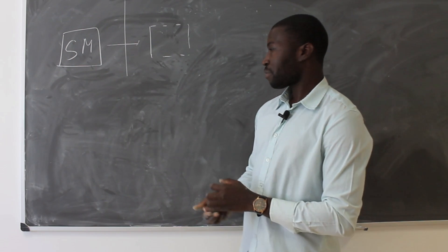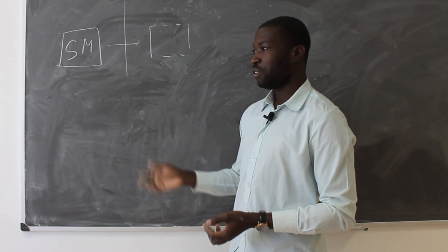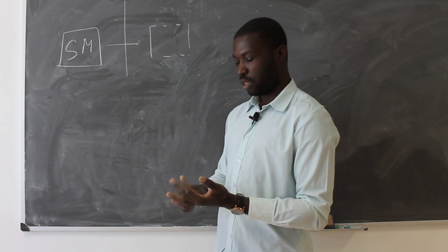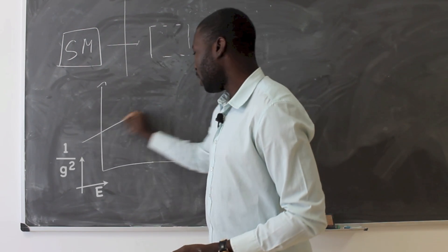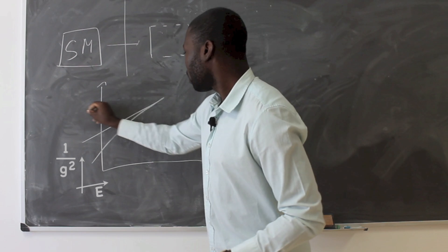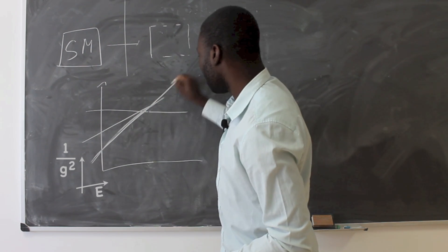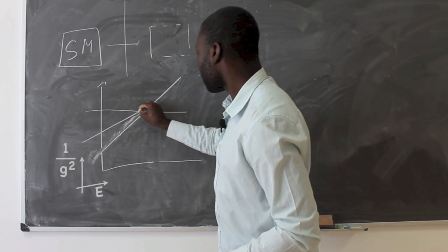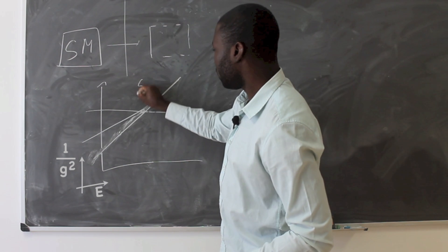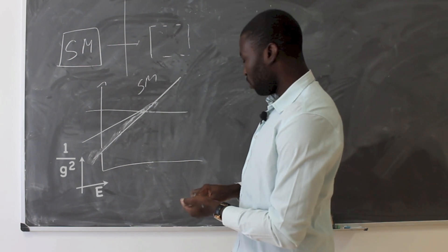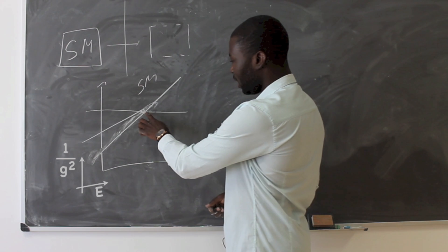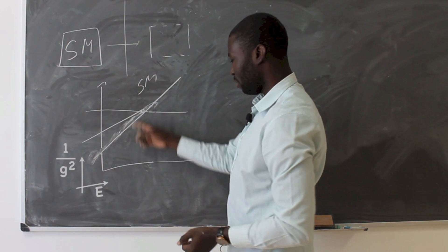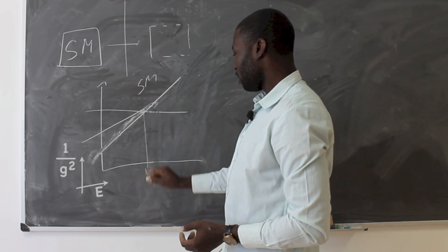On top of that, if you take the standard model alone and you try to plot the coupling constant of the three forces weak, strong, electromagnetic, as the energy goes higher, they tend to meet in some one place. In the standard model, this is the standard model, so they tend to meet in around some region but they do not meet exactly all three in the one place. They are crossing each other in some region which is very high.